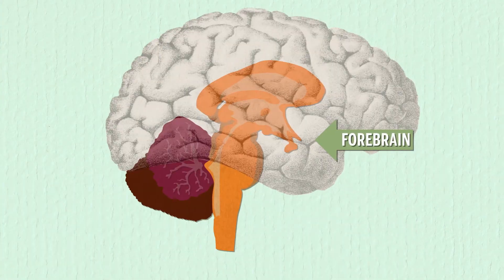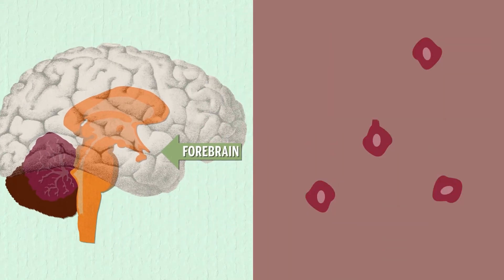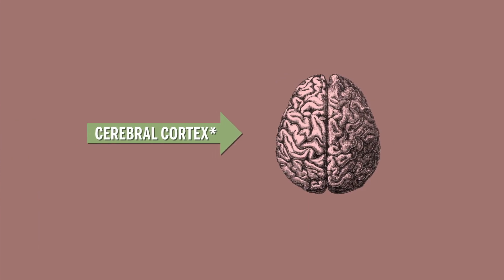My name is Tarek Haydar. My laboratory studies development of the forebrain, in particular how the different types of neural stem cells in the brain manufacture the super complex cerebral cortex. That whole process is really not very well understood.